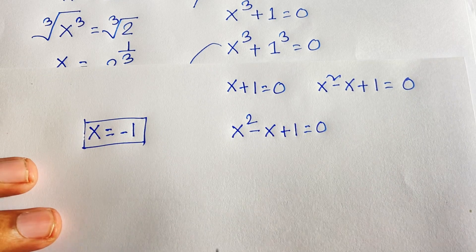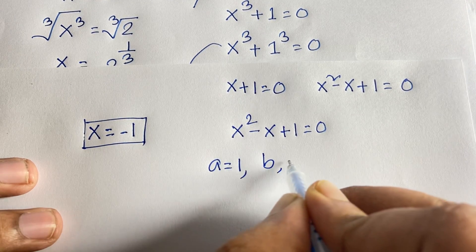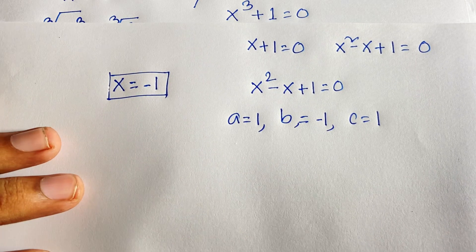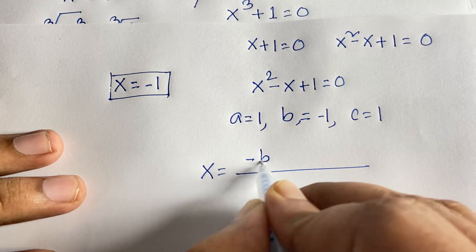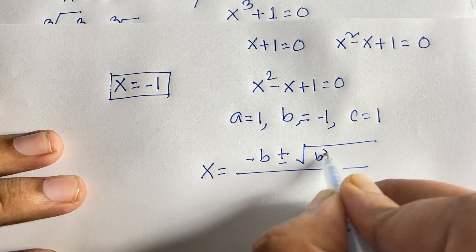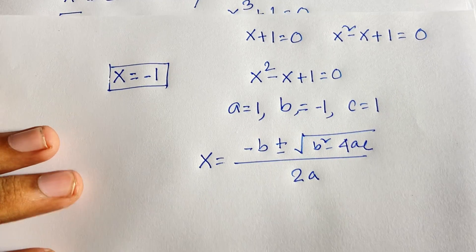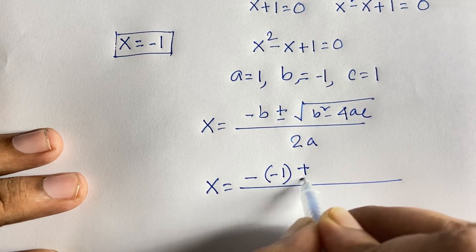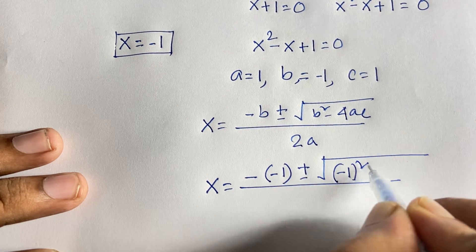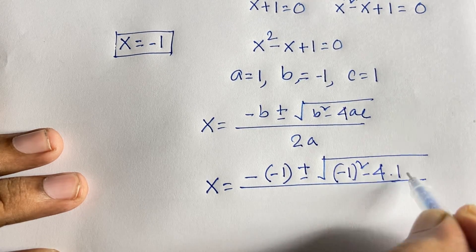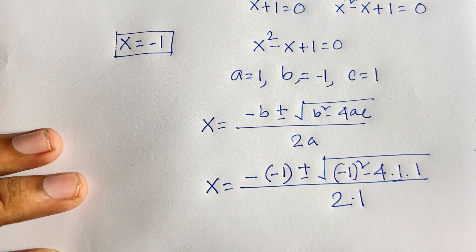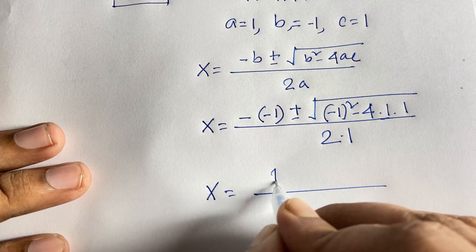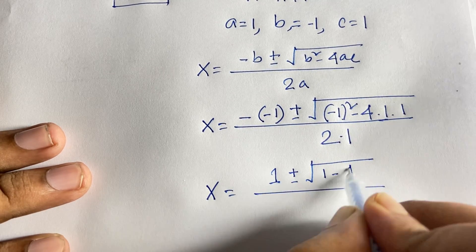For x squared minus x plus 1 equals 0, we identify a equals 1, b equals minus 1, and c equals 1. Applying the quadratic formula: x equals minus b plus or minus square root of (b squared minus 4ac), all over 2a. Substituting: x equals minus(minus 1) plus or minus square root of ((minus 1) squared minus 4 times 1 times 1), over 2 times 1.